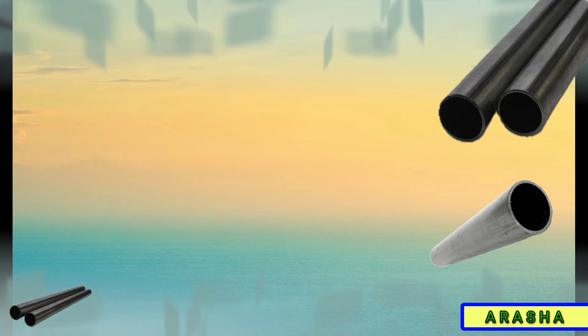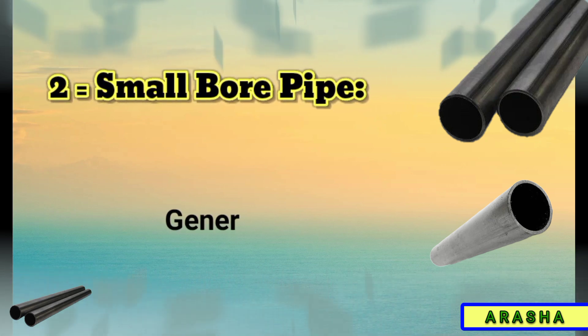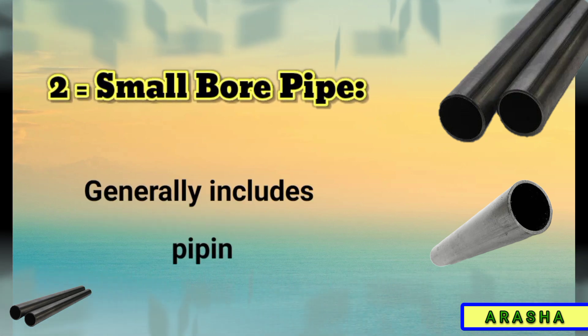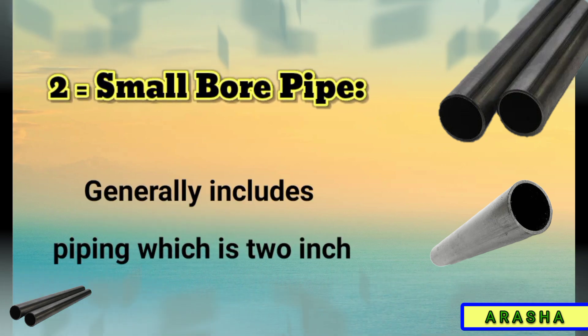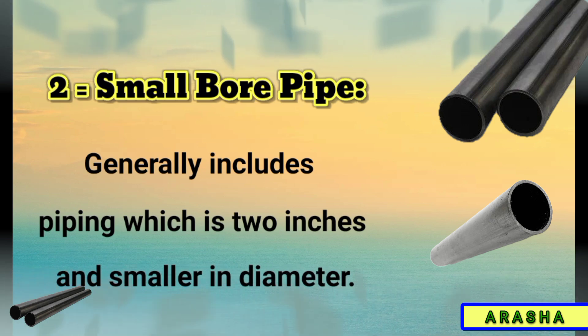Number 2: Small bore pipe. Generally includes piping which is 2 inches and smaller in diameter.